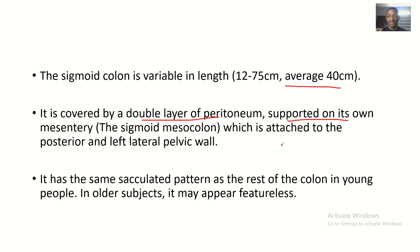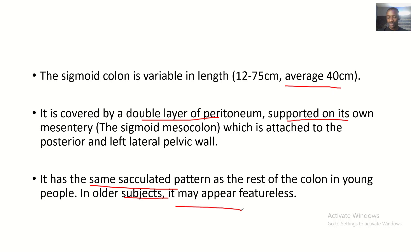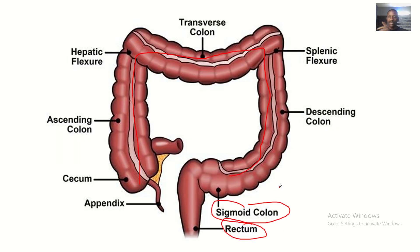The sigmoid colon is supported on its own mesentery, which is attached to the posterior and left pelvic wall. It has the same sacculated pattern as the rest of the colon in young people only. In older subjects, it may be featureless — just smooth, with no sacculations.